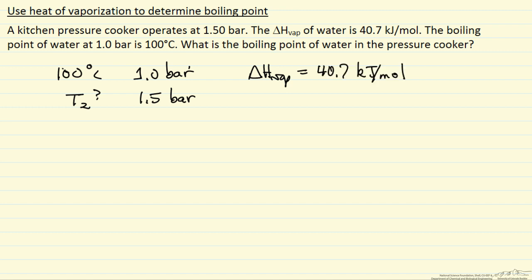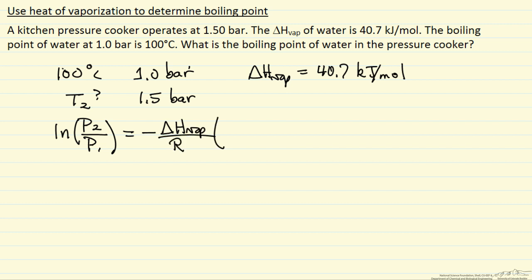The Clausius-Clapeyron equation relates the log of the saturation pressure at one temperature to the saturation pressure at another temperature. It relates it to the heat of vaporization, the gas constant, and these two temperatures — and these are of course absolute temperatures.